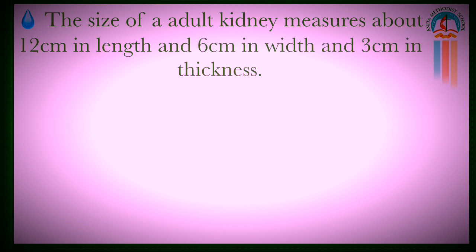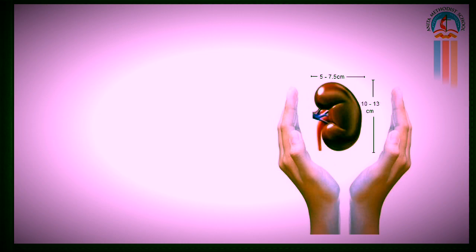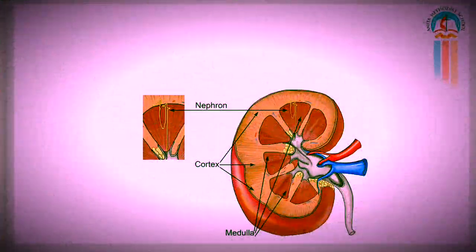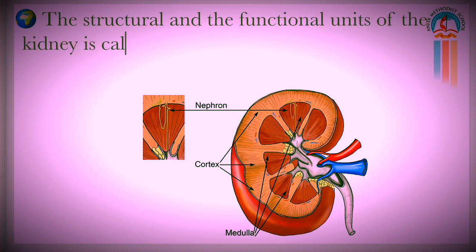The size of the kidney measures about 12 cm in length, 6 cm in width, and 3 cm in thickness. Can you see the picture? 12 cm in length, 6 cm in width, and 3 cm in thickness.